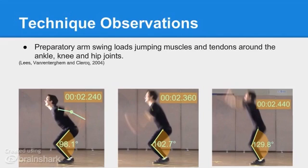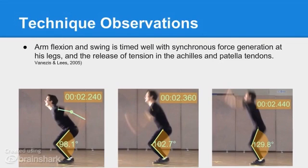This energy was used predominantly for three things. Firstly, to increase the kinetic and potential energy of the arms at take-off. Secondly, to store and release energy from the muscles and tendons around the ankle, knee and hip joint. And lastly, to pull on the body through an upward force acting on the trunk at the shoulder. Furthermore, the arm swing is timed well with the synchronous force generation at the legs, and in turn, the release of tensile energy in the patella and Achilles tendons. Thus, arm inertia can work simultaneously with lower limb acceleration.